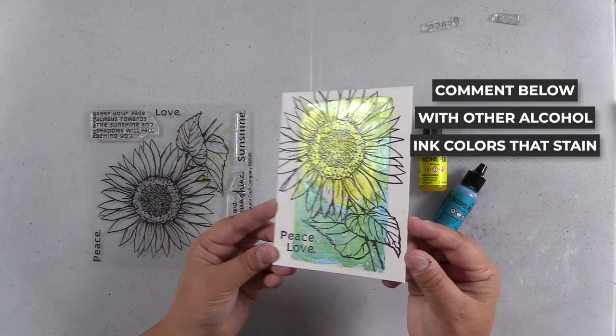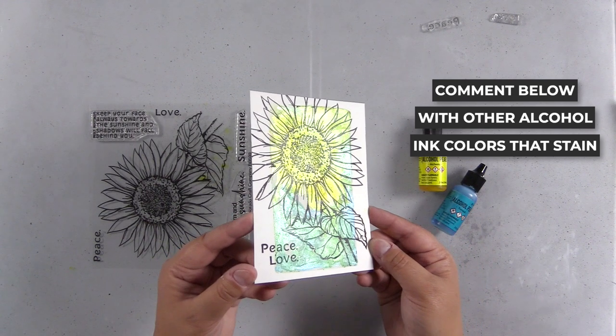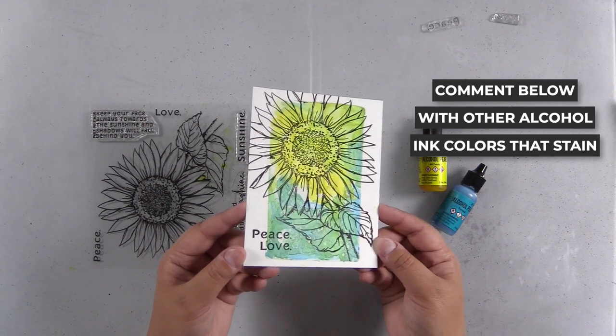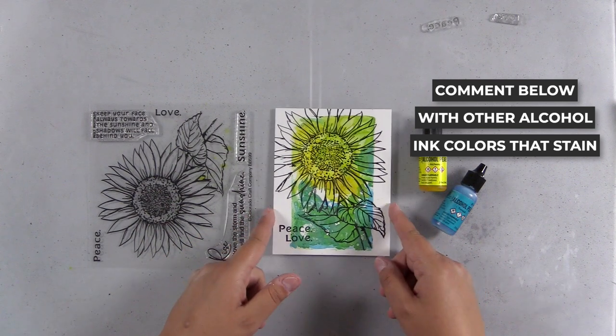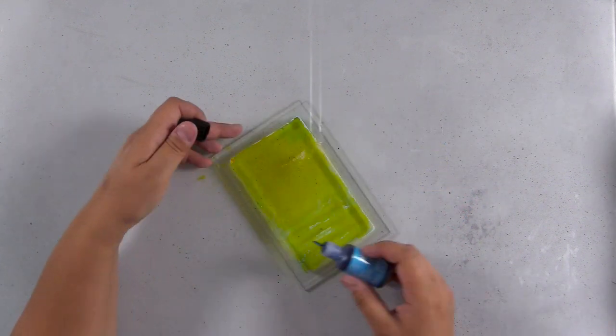Do me a favor and leave me a comment down below if you know of any other alcohol ink colors that stain your gel plate. I think that'll be helpful for other people. Really this alchemy one is the first one that I've come in contact with. And here's the staining I was talking about.